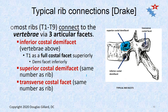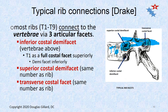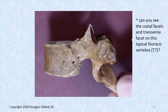An important rule: the superior costal demi-facet always connects to the rib with the same number. So if this is T6, the T6 rib connects here — but the rib is going to spill over and also connect to the vertebra above. The transverse costal facet also connects to the same-number rib. So whenever you look at these facets, all you have to do is know the name of that vertebra, and that tells you which rib it is.